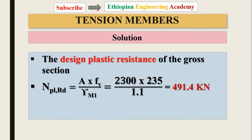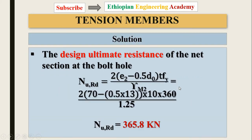The design plastic resistance of the gross section is calculated as the gross area times yield strength divided by the partial safety factor. Inserting the values gives the design plastic resistance result.